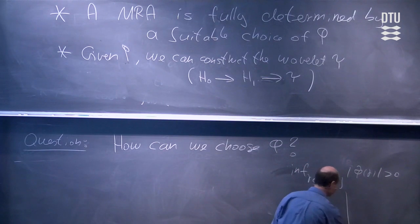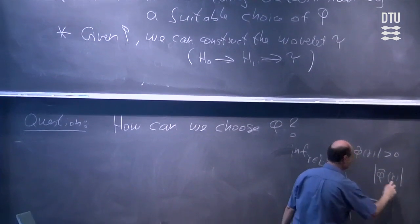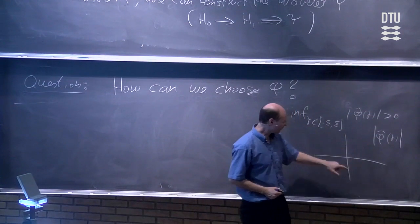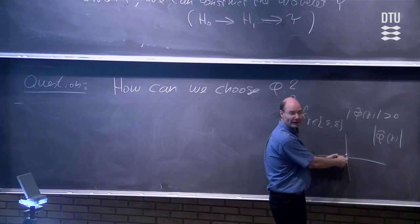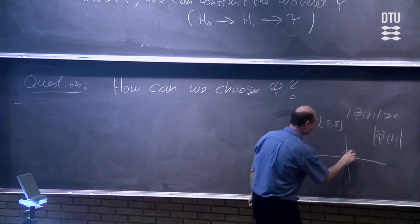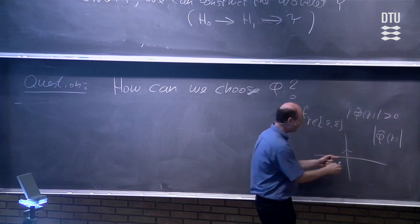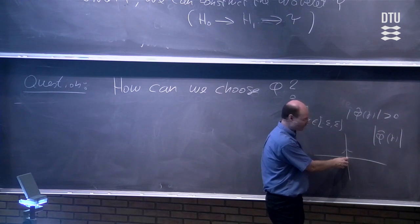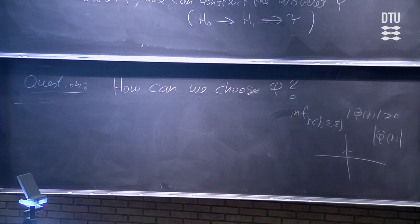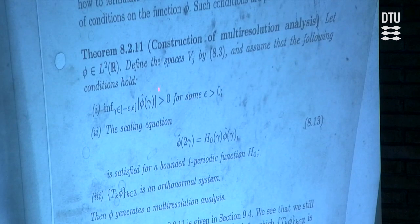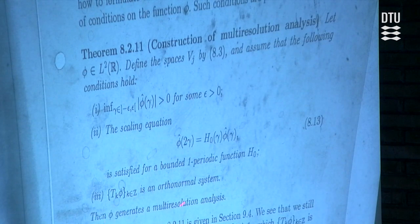What this condition means is that if you make a graph of the function |φ̂(γ)|, then this function is not allowed to go close to the point (0, 0). Around γ equal to zero, it has to take values that are not equal to zero — it has to be something that goes like this. It is just not allowed to get close to the point (0, 0). Whenever the variable is close to zero, the function has to stay away from zero. This is something you can easily check because you simply calculate the Fourier transform of your function and look at the absolute value close to γ equal to zero. In practice, this is an easy condition to check.